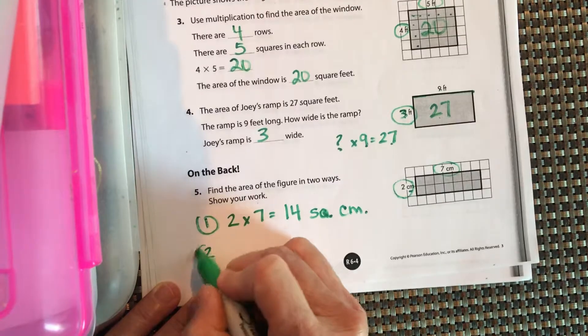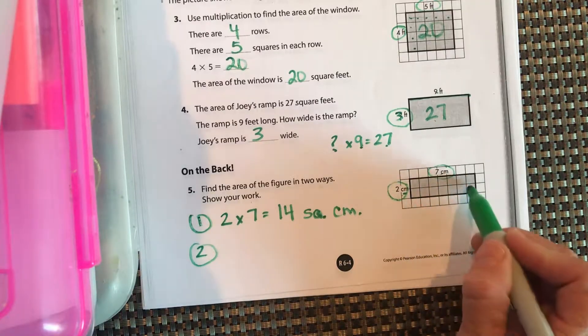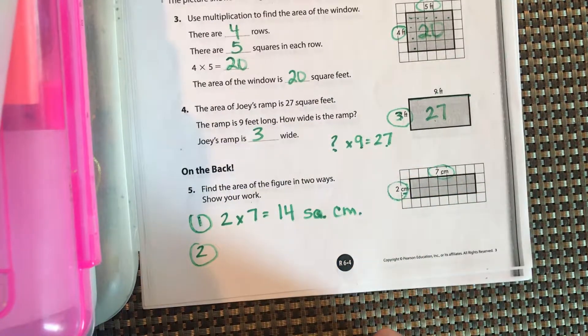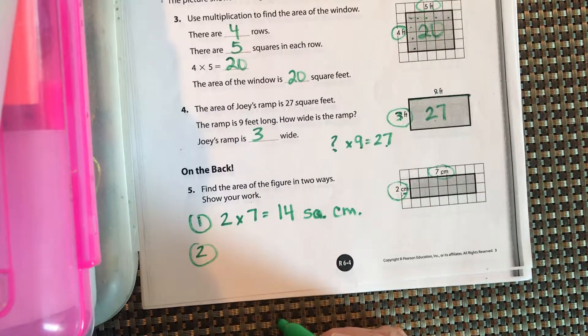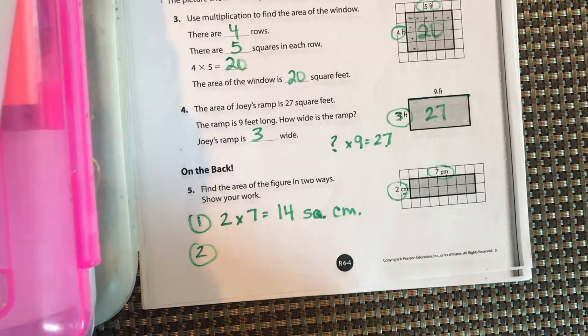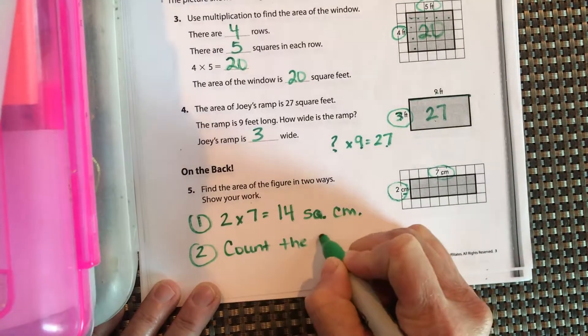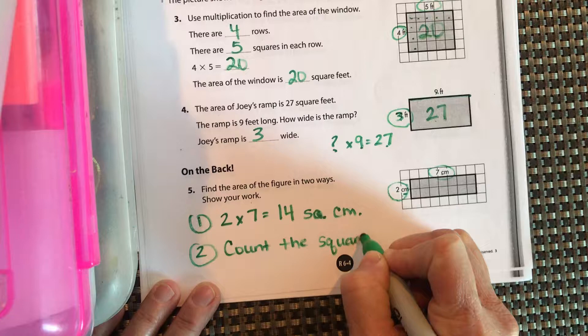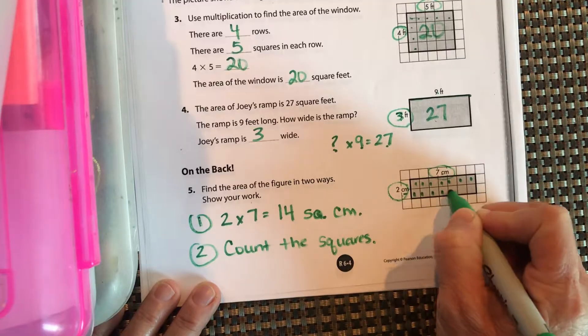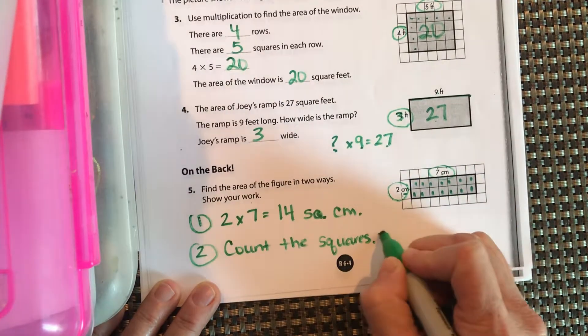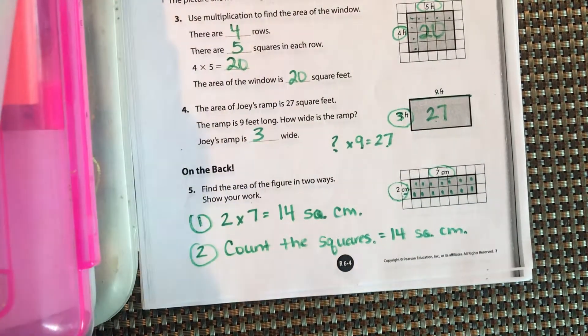What's the other way that we can figure out, if we didn't want to multiply these numbers? How can we figure out how many squares we have in that? Write that down at number two. Okay, you should have written count the squares, right? 1, 2, 3, 4, 5, 6, 7, 8, 9, 10, 11, 12, 13, 14. 14 square centimeters. All right, good job.